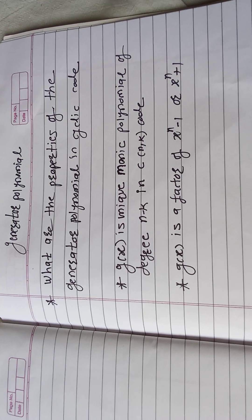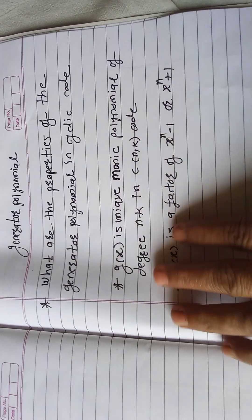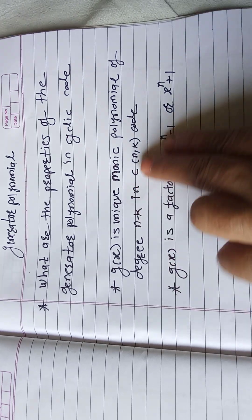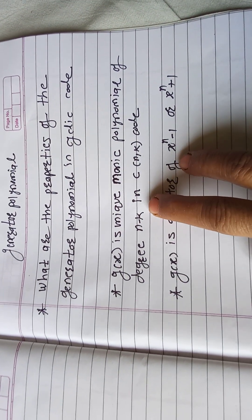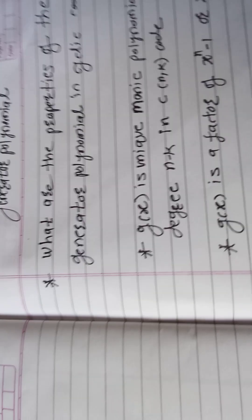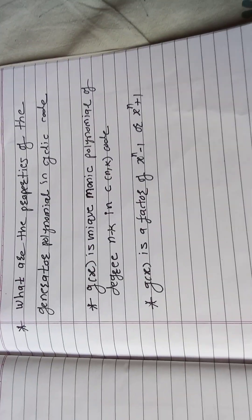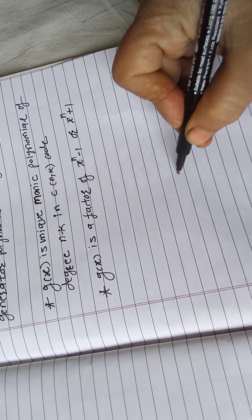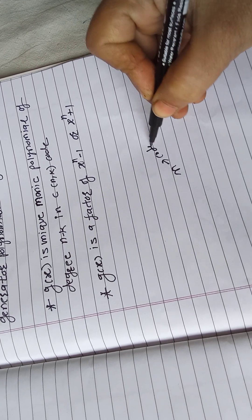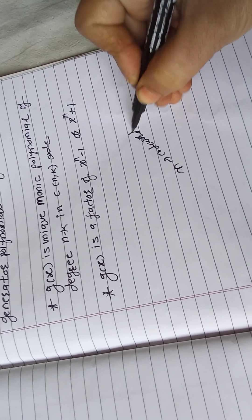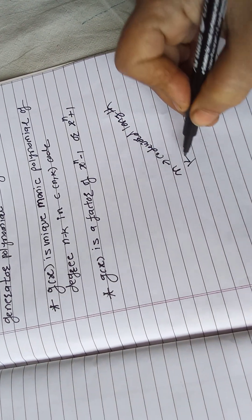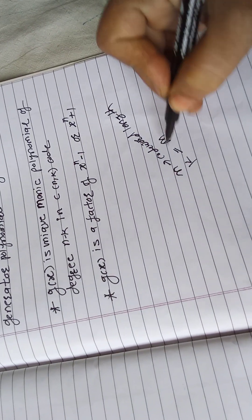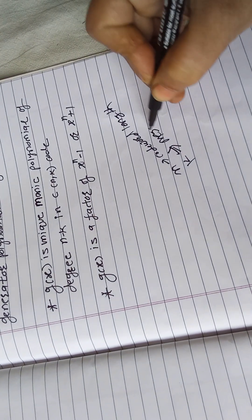The generator polynomial g(x) is a unique monic polynomial of degree n minus k. So that means the degree of the generator polynomial should be n minus k, where n is the codeword length and k is the message word length.